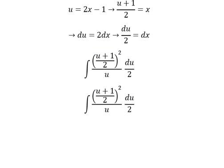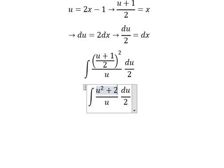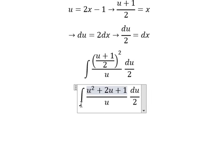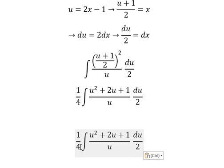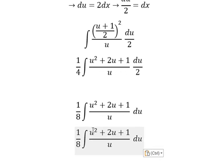Now we need to expand this one. So number 2 and number 4, we have 1 over 8. So this one divides by this one, this one divides by this one, 1 divides by u.